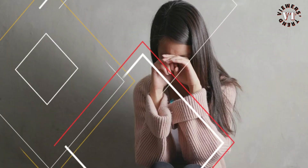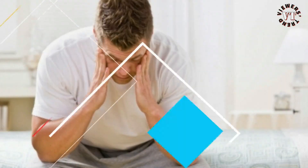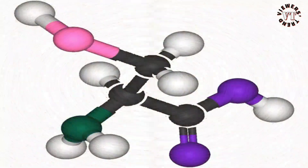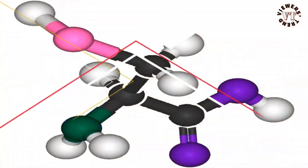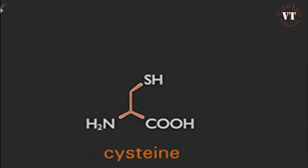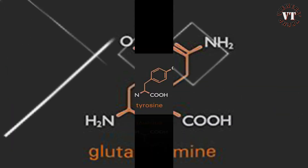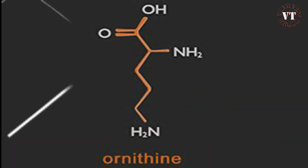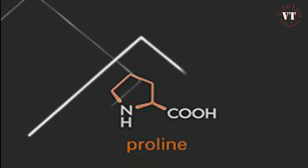Conditional amino acids are usually not essential, except in times of illness and stress. Conditional amino acids include arginine, cysteine, glutamine, tyrosine, glycine, ornithine, proline, and serine.